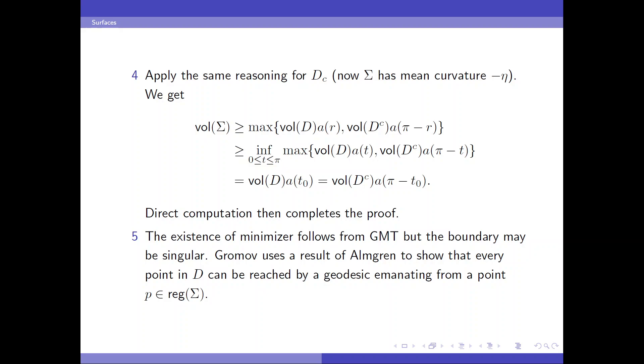Finally, let's turn to our initial assumption. The existence of minimizer is OK and follows from the geometric measure theory. But the theory implies that the boundary may be singular in higher dimensions. So Gromov uses a deep result of Almgren to show that every point in D can be reached by a geodesic emanating from a regular point. So the singular set doesn't affect the Hahn-Banach inequality and this doesn't affect the proof.